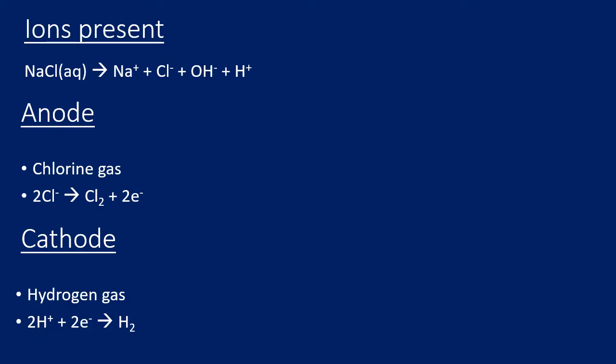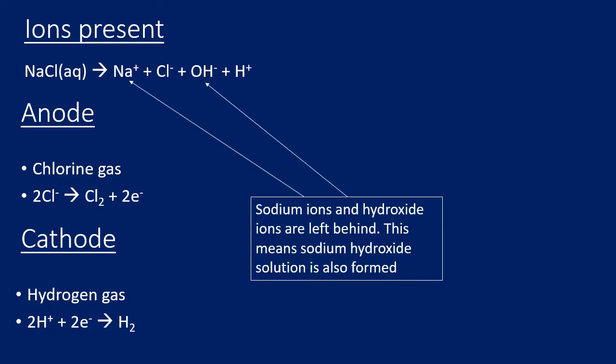The sodium ions and hydroxide ions are left behind, so there's a solution containing sodium hydroxide at the end, which is useful. You can see your three products here: chlorine gas at the anode, hydrogen gas at the cathode, and sodium hydroxide left in solution.